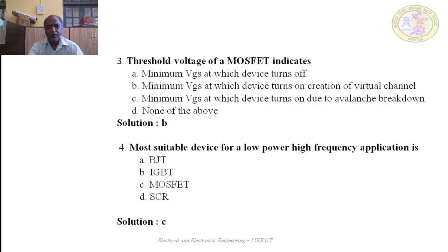Question 4: Most suitable device for low power and high frequency application is: A — BJT; B — IGBT; C — MOSFET; D — SCR. The correct answer is C — MOSFET.